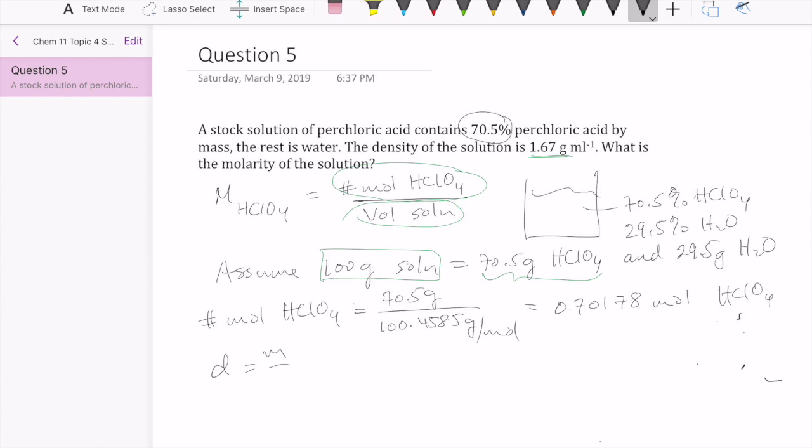So density is mass over volume. So that means volume must be mass over density. We assume 100 grams of the solution, and then we're going to divide this by the density of the solution, which is 1.67 grams per mil. And so that would leave us with 59.88 milliliter.